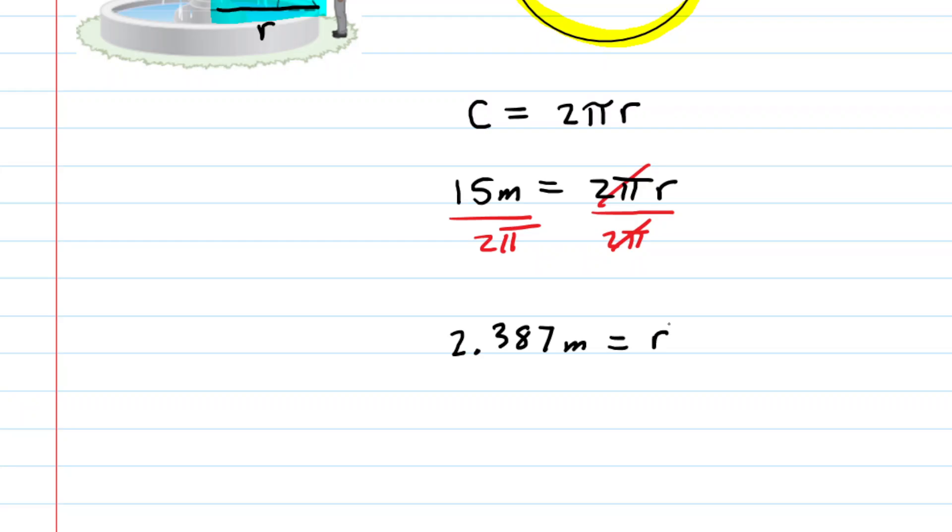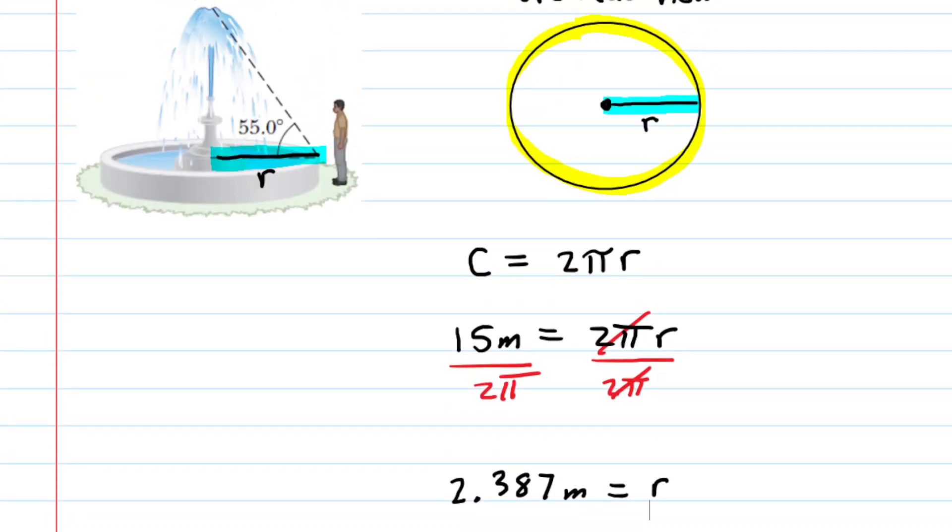So that's the radius, and again the radius in the original picture is this length right here, basically from the base of the fountain to where the student is standing. Now once we have that radius we can find the height. Let's take a look at how we can do that.